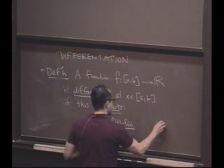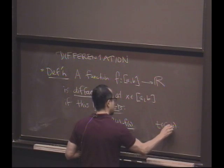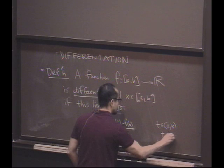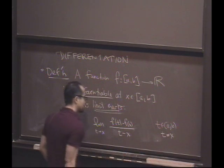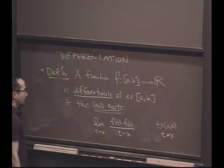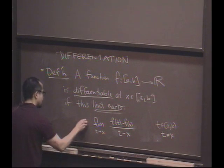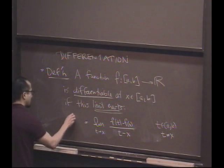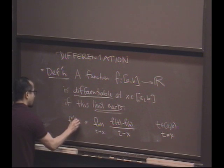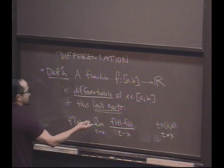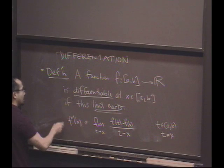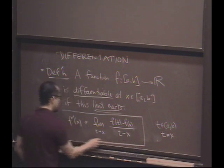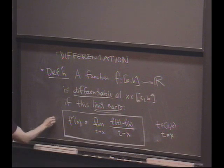We'll demand that t be somewhere inside. So t is approaching x, but t is not x. And if this limit does exist, we'll note, we'll give this limit a name. We'll call it f prime at x, because this limit may depend on x.